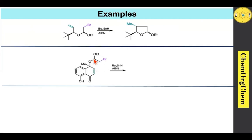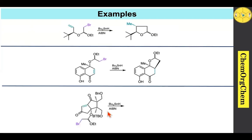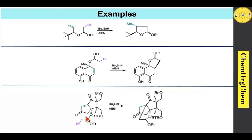This is another example. Here also having the bromoacetal part; when you use tributyltin hydride and AIBN condition, which readily undergoes cyclization to produce this five-membered ring system. Here you see this group present in the top face; therefore the cyclization also occurred in the top face to produce this particular product. This is another example — here also having a bromoacetal part. When you use tributyltin hydride and AIBN, which readily gets cyclized to produce this corresponding five-membered ring system. Since this group is present in the bottom face, the cyclization also takes place in the bottom face to produce this product.